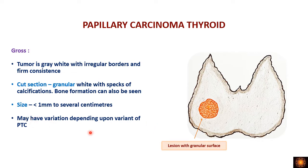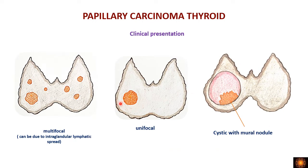Gross presentation may vary depending on the variant of papillary thyroid carcinoma — some will have more fibrosis, some will be cystic. Classically it is a firm, gray-white tumor with irregular borders and a granular cut surface. It can present as unifocal or multifocal; multifocal presentation occurs because the tumor spreads through intraglandular lymphatics.